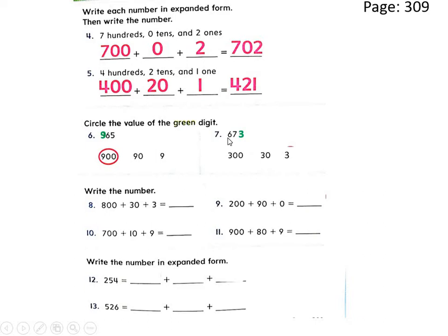Question number seven: the number is six hundred seventy-three, and the digit is three. Three is in the ones place value, so its value is three. Question number eight: write the number eight hundred plus thirty plus three.